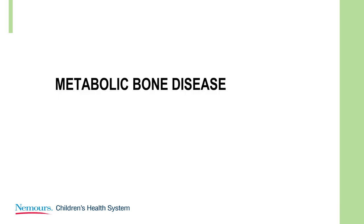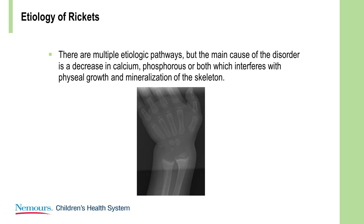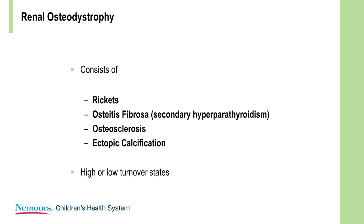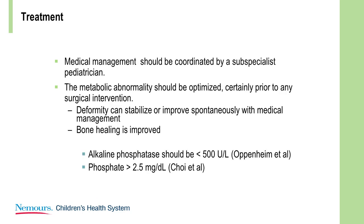Metabolic bone disease — I'm going to give an overview of rickets. There are multiple etiologic pathways; the main problem is usually phosphorus loss and calcium loss. The most common diagnoses are nutritional rickets and vitamin D-resistant rickets, usually the X-linked form. Unusual etiologies include oncogenic causes and disorders such as fibrous dysplasia and neurofibromatosis. The end result is renal osteodystrophy. You have to ensure control of the metabolic abnormality — a nephrologist or endocrinologist will do it, but get the child evaluated before you operate.